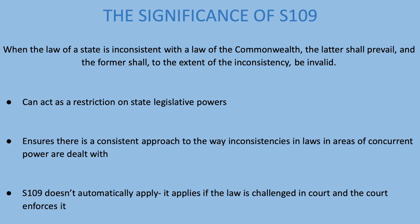Let's begin by looking at the significance of Section 109. When the law of a state is inconsistent with the law of the Commonwealth, the latter shall prevail and the former shall, to the extent of the inconsistency, be invalid. Ultimately, this means that if a state law is inconsistent with a Commonwealth law, the Commonwealth law will prevail and the state law, to the extent of the inconsistency, can be deemed invalid.